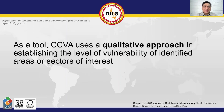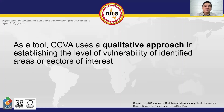As a tool, CCVA uses a qualitative approach in establishing the level of vulnerability of identified areas or sectors of interest. Qualitative research involves collecting and analyzing non-numerical data to understand concepts, opinions, or experiences, such as how people experience the world. It is the opposite of quantitative research, which involves collecting and analyzing numerical data for statistical analysis. Some of the most common qualitative methods are observations, interviews, focus group discussions, surveys, and secondary research.